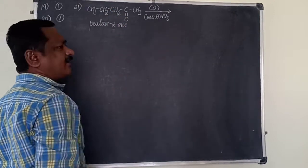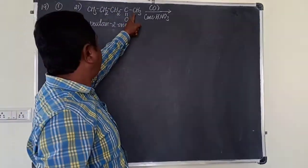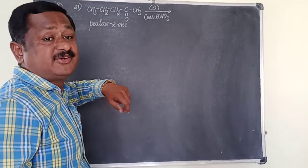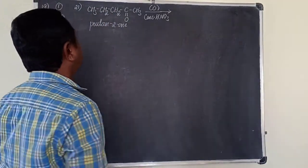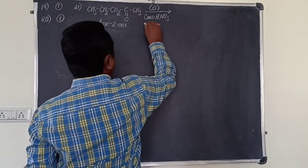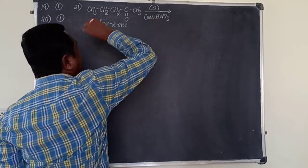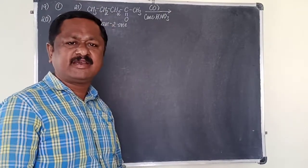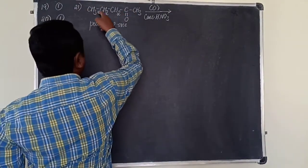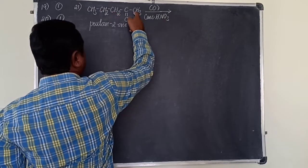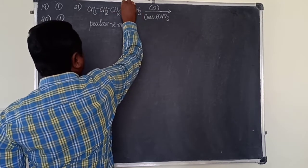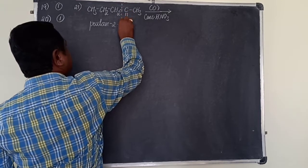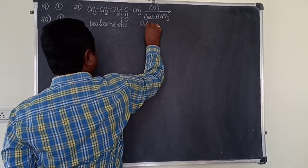This is an unsymmetrical ketone. The keto group always combines with the smaller alkyl group. Generally, it is propyl, three carbon atoms. This is one carbon atom, smaller one carbon atom. Keto group stays with, keto group combines with smaller alkyl group. This is Popoff's rule.